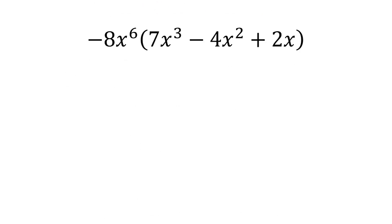We have negative 8x to the sixth multiplied by 7x to the third minus 4x squared plus 2x. We can again distribute the negative 8x to the sixth to each of the three terms inside parentheses.